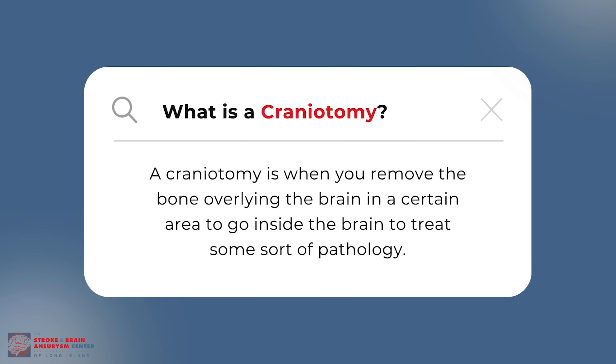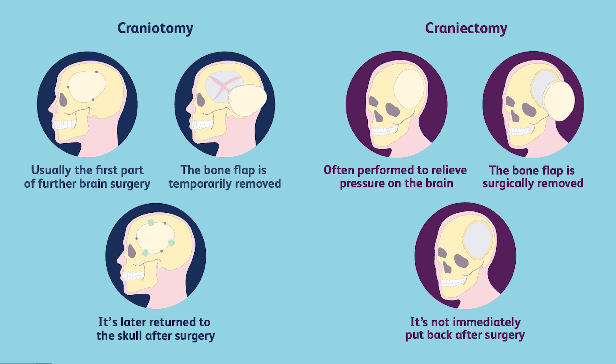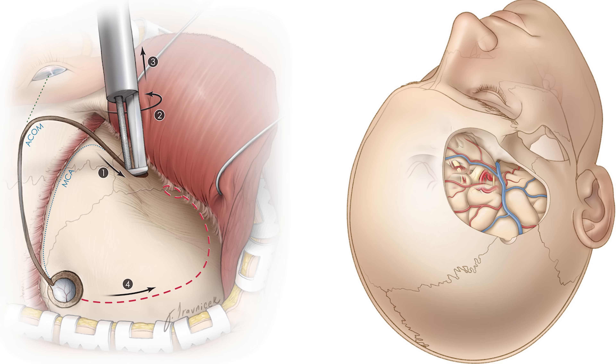Another frequently used term is craniotomy versus craniectomy. A craniotomy is when you remove the bone overlying the brain to treat some pathology, then put the bone back on at the end. A craniectomy is when you completely remove the bone and store it in a sterile freezer, putting it back several weeks later. This is done when there's substantial brain swelling — a rigid skull would cause injury, so removing the bone allows the brain to swell safely before reimplantation.